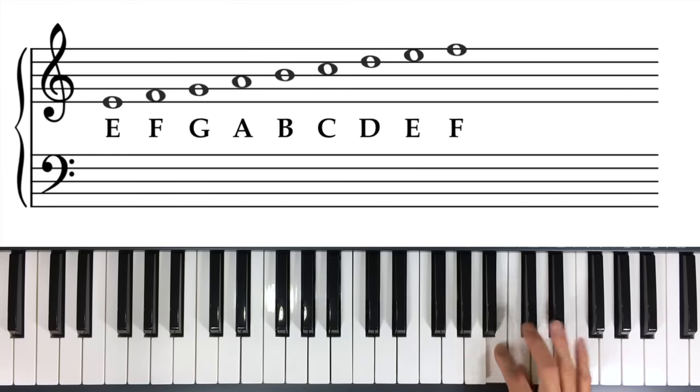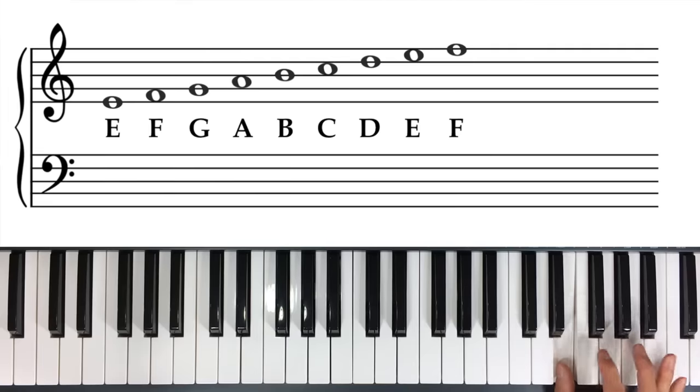And you go up to B, and the next space is C, right, and then line, space, line, you're at F, and that's the pattern of going from line to space. You're moving up letters.